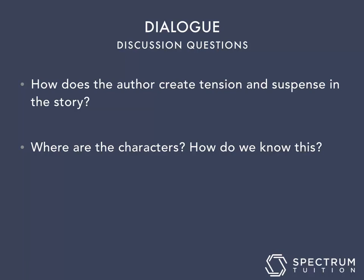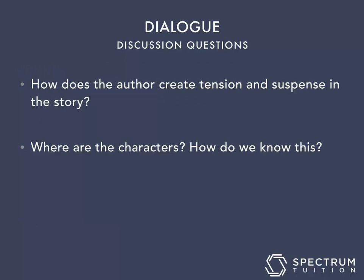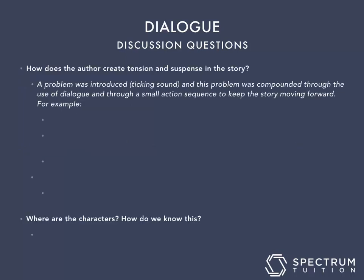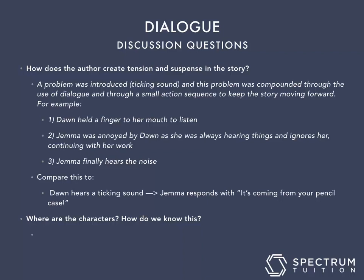Answer the following questions: How does the author create tension and suspense in the story? And where are the characters — how do we know this? Pause the video and answer these questions. A problem was introduced — the ticking sound — and this was compounded through dialogue and a small action sequence: Dawn held a finger to her mouth, Jemma was annoyed and ignored her, then Jemma finally hears the noise. This is more effective than simply going from Dawn hearing the sound directly to 'it's coming from your pencil case.' The characters are at school — we know because Jemma was doing maths problems.